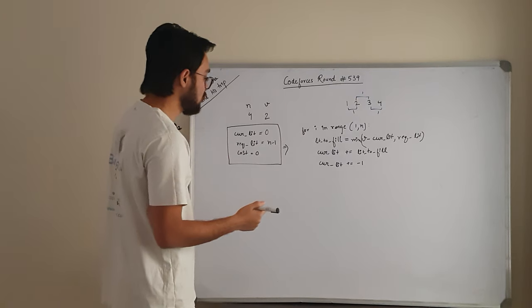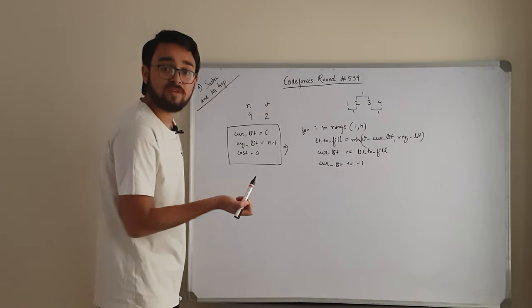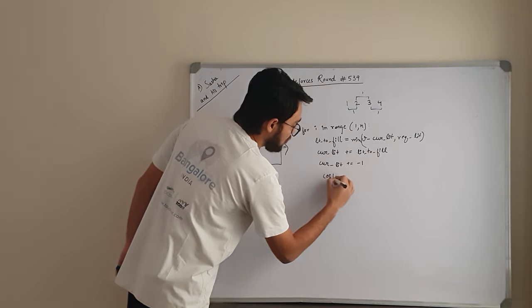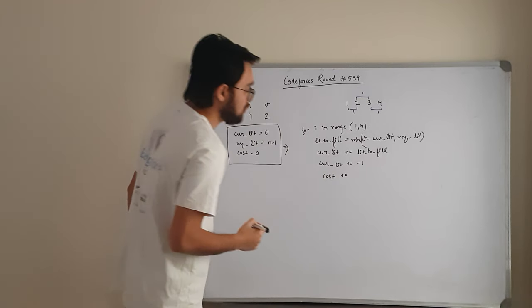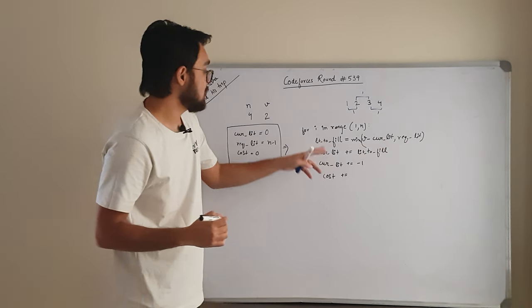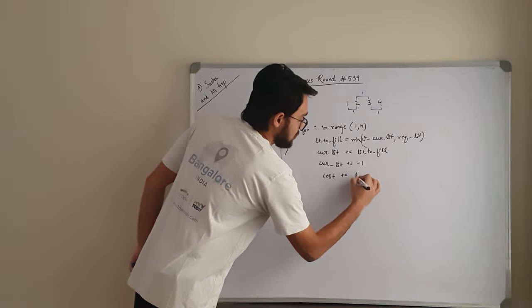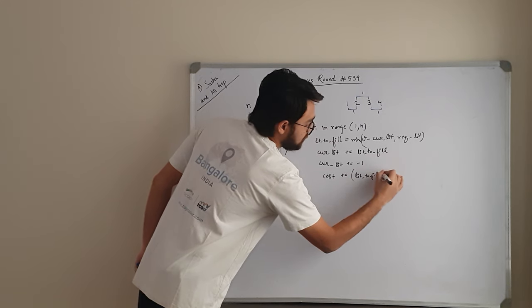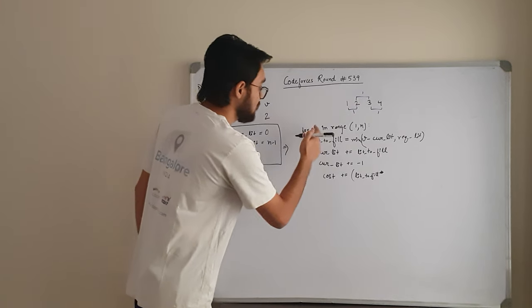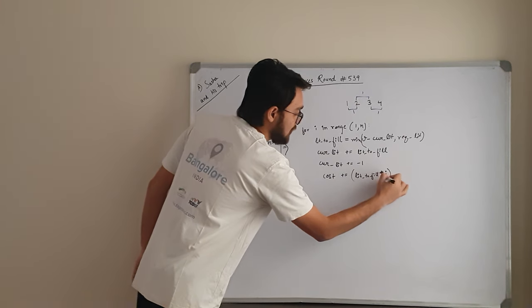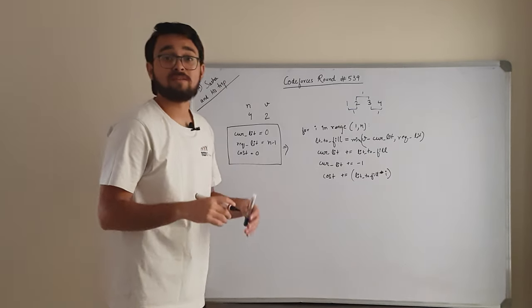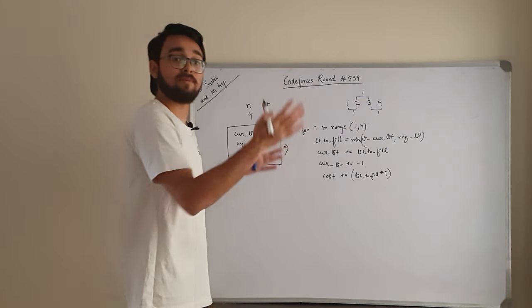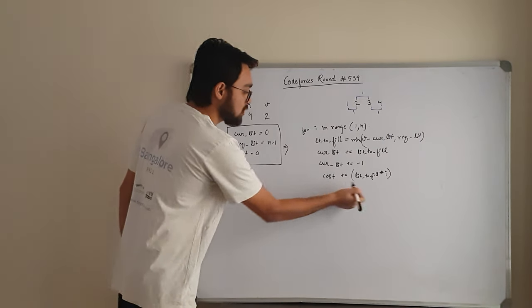The cost is also updated: we add liters_to_fill multiplied by i, since the cost per liter at city i is i. For example, if we are at city 2 and fill 3 liters, the added cost is 3 times 2 equals 6.